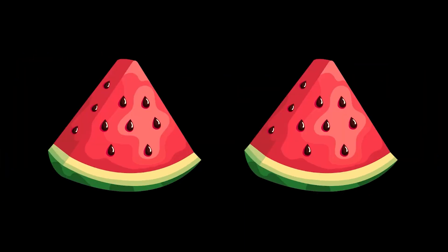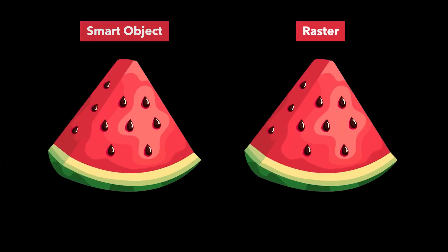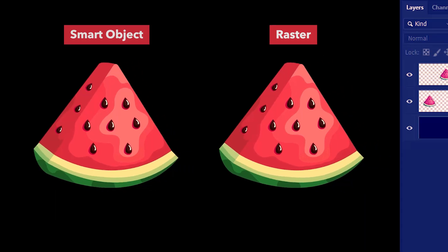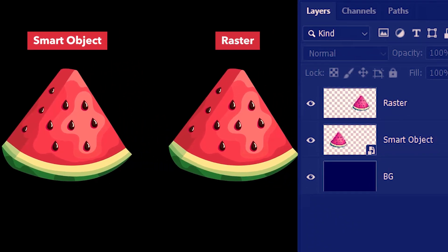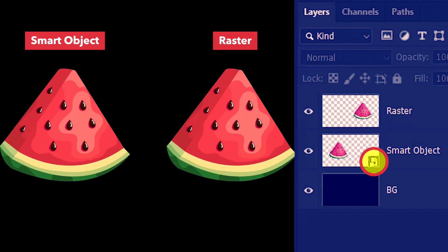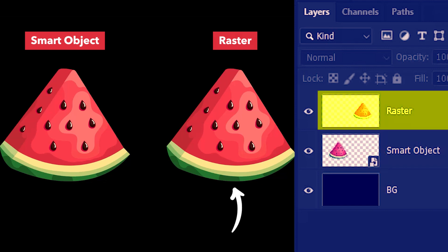But how do we know which is a smart object and which is a raster? We can tell from the layers panel. This is the watermelon on the left, and you can see it has an icon on it — that's how we know it's a smart object. The raster image has no such icon.